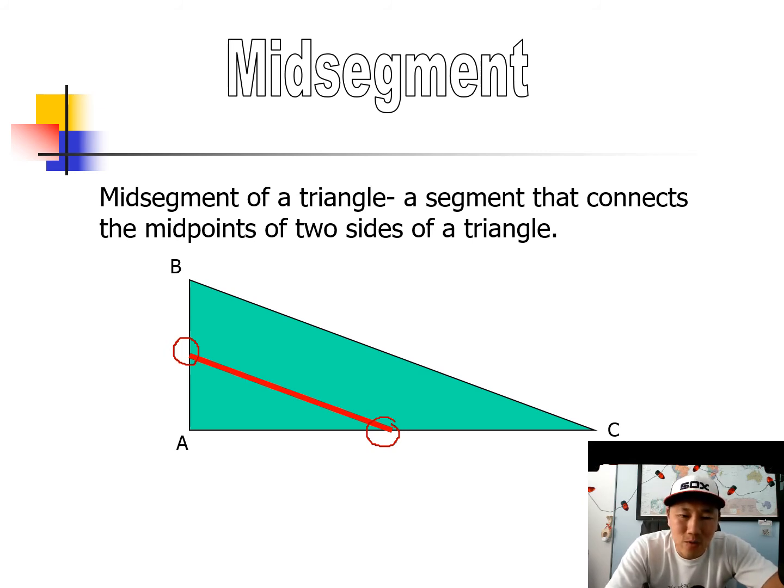And there's mid-segments all the way around, too. What if I wanted to find the middle of BC with AB? That's its mid-segment. Or here's the third mid-segment. That one's kind of hard to see, but the middle of AC with the middle of BC. So, there's actually three mid-segments in every triangle.